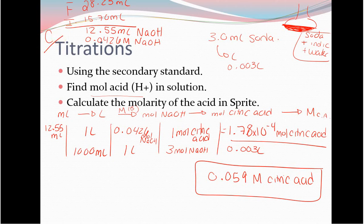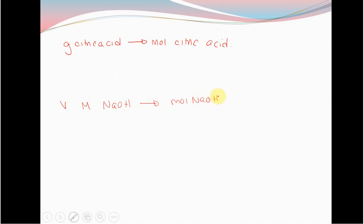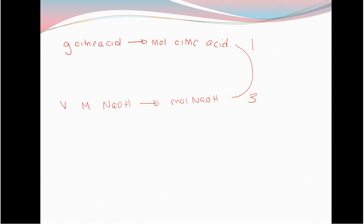For Part D, you're actually going to weigh out some grams of citric acid. Using the molar mass you'll go to moles of citric acid. You'll also use some volume and molarity of NaOH to find the moles of NaOH used. Ideally Part D will confirm that you use three moles of NaOH for every one mole of citric acid — confirming that it's a triprotic acid. It'll probably come out to something like 2.95 or 3.15, which is close enough.